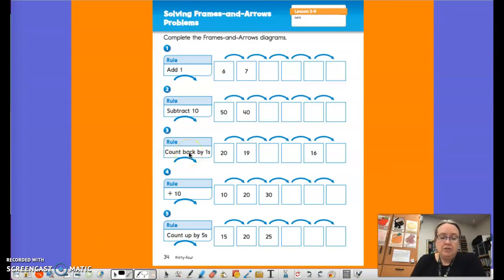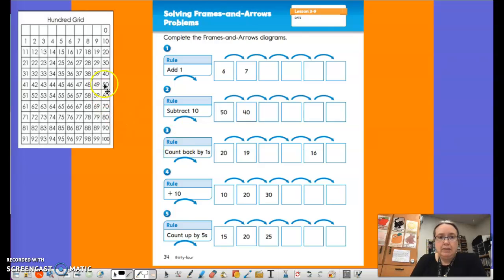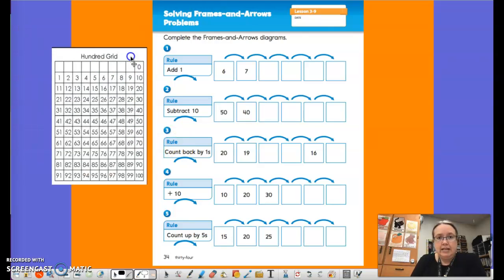So here in your math journal, and I know you guys don't have your math journal, but I'm going to do a couple with you on here. And then you guys are going to practice. So I'm going to bring that number grid in here just in case I need it. So this first one, I think you girls and boys can do on your own. It says add one. So let's just say counting six, seven. Seven plus one is eight. Okay. And then I want you to finish those out.